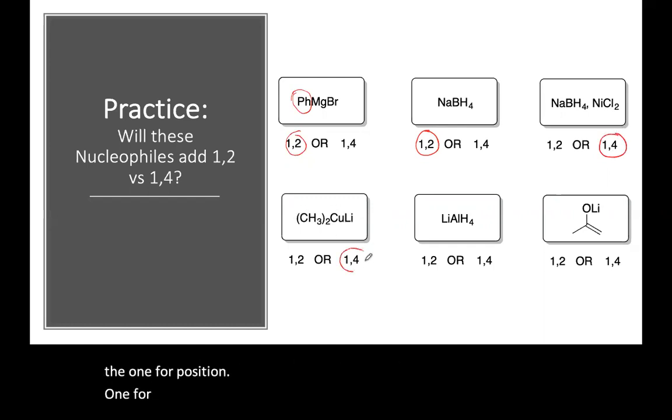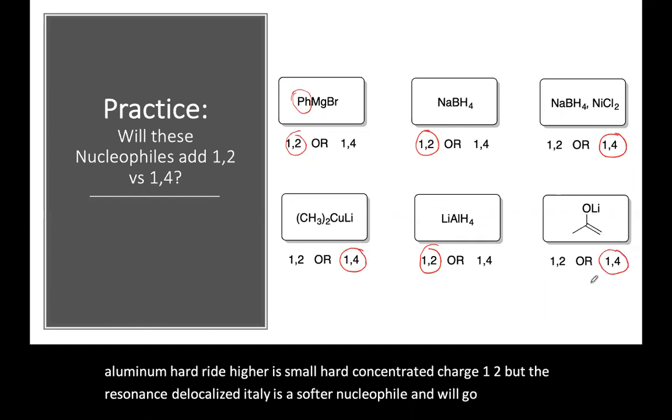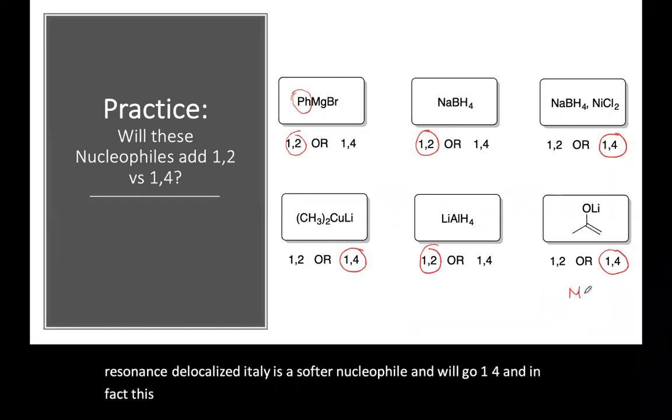Cuprates, typically 1,4, softer nucleophile. Lithium aluminum hydride is small, hard, concentrated charge, 1,2. But the resonance delocalized enolate is a softer nucleophile and will go 1,4. And in fact, this is also called a Michael addition, so we'll see some emphasis on that later.